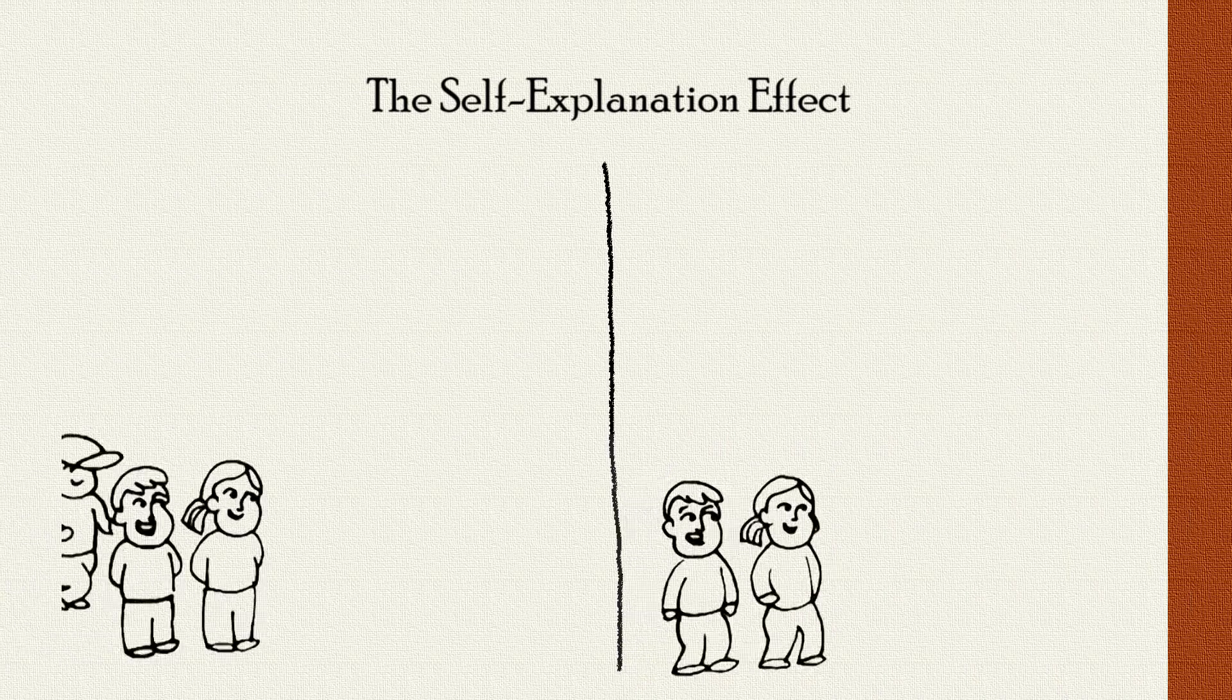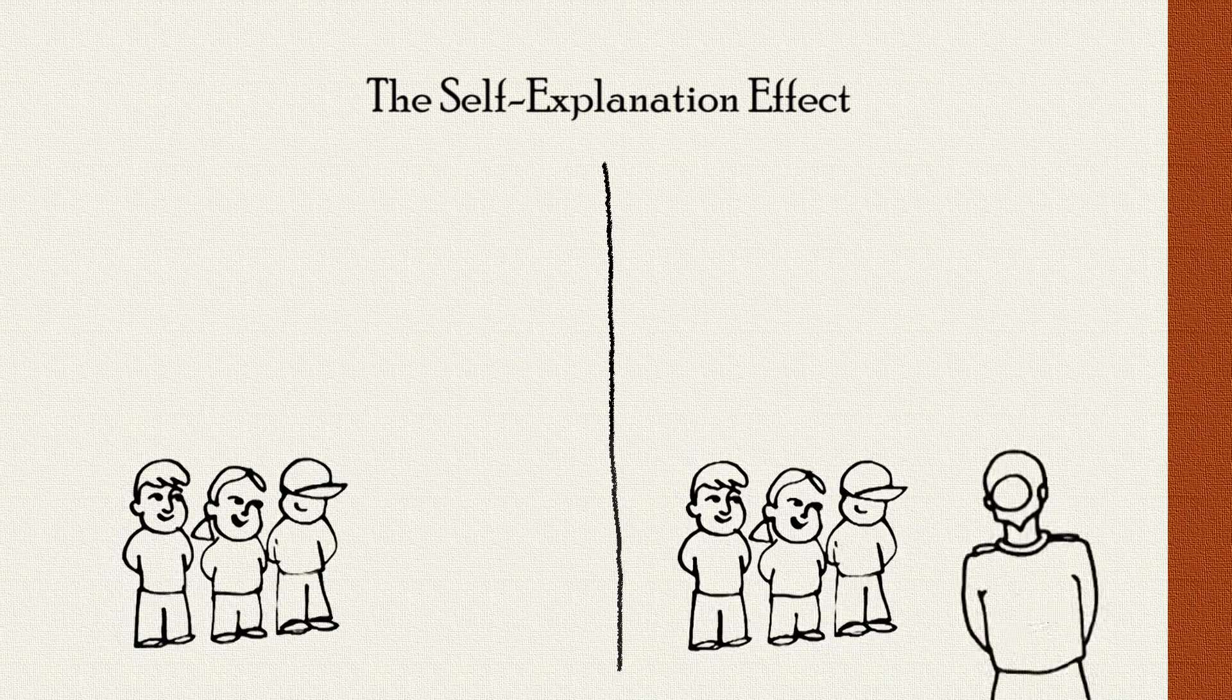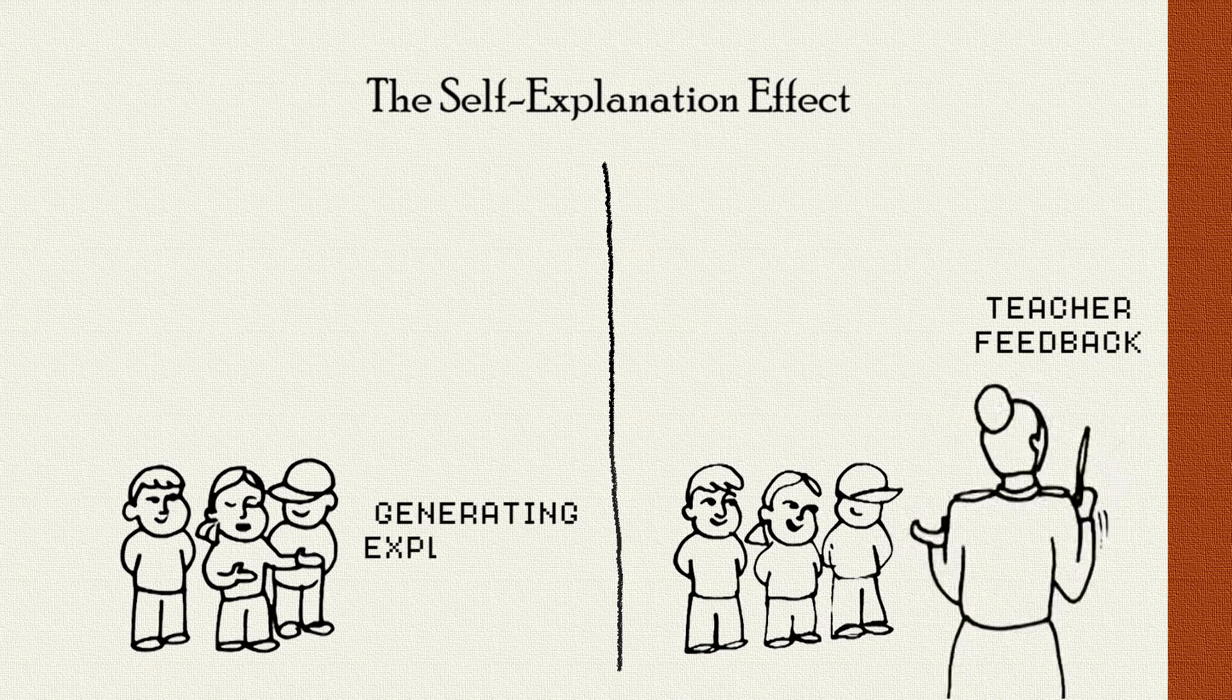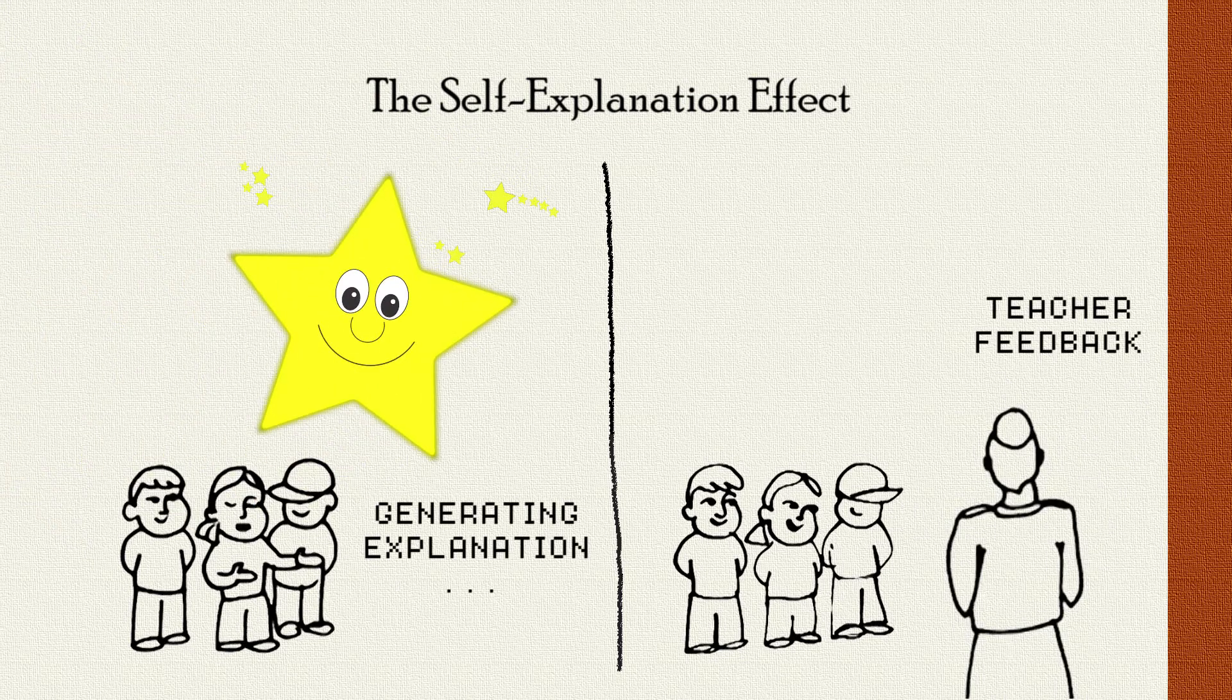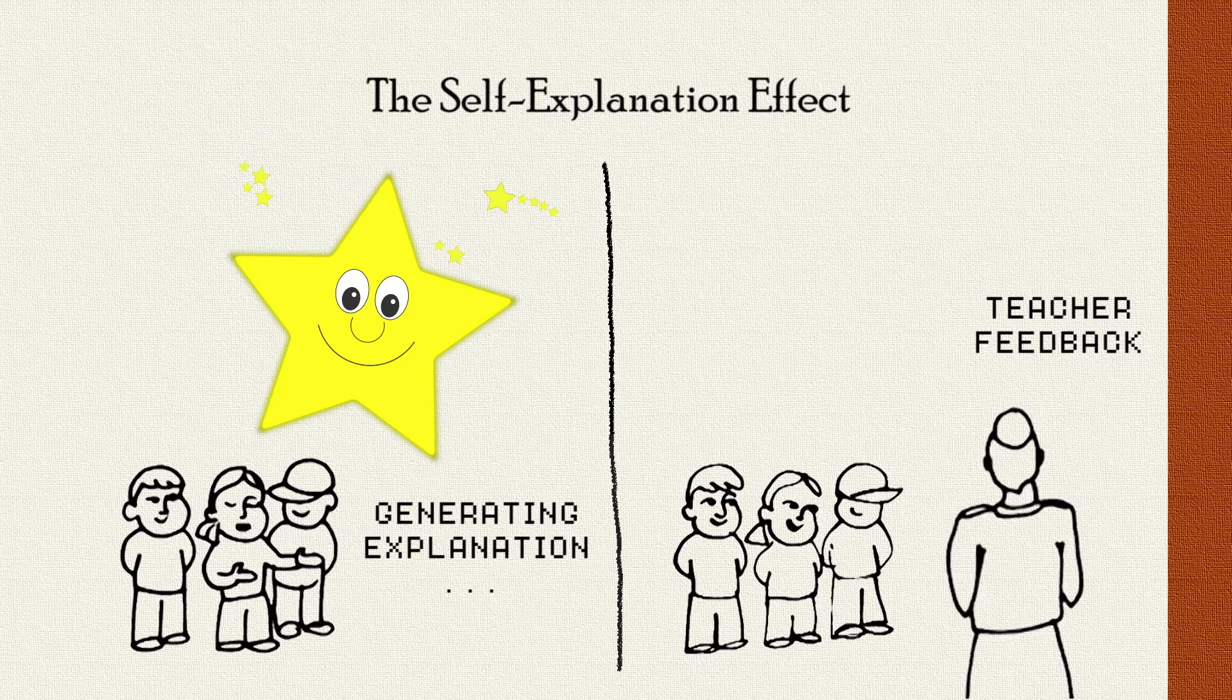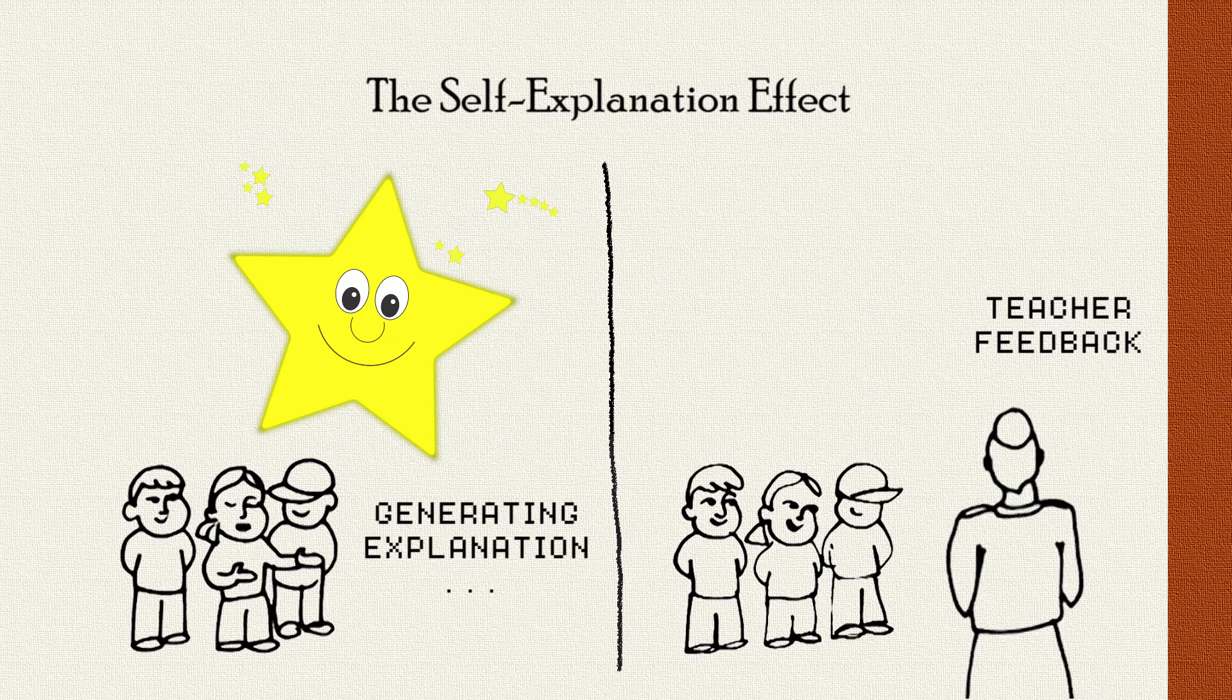When children explain events, they learn more than when just given feedback about the accuracy of their predictions. So there's something about the process of generating an explanation that has unique learning benefits. And these benefits are greater than when simply being told whether your belief or information is correct or not.